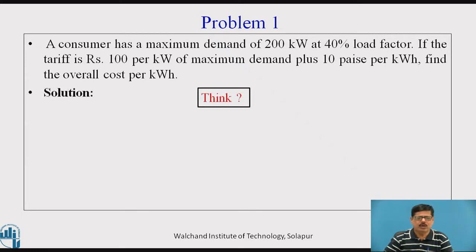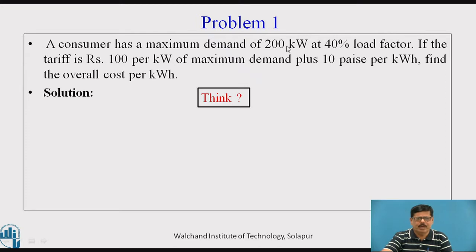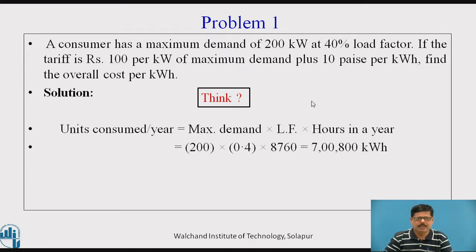Solution. The term load factor is given — load factor is equal to average load upon peak load. By using this definition, we can calculate the average load by multiplying the load factor with the peak demand. Therefore, units consumed per year will be equal to maximum demand, that is 200 kW, into load factor 0.4, into hours in the year, 8760. So we get the units consumed in a year.